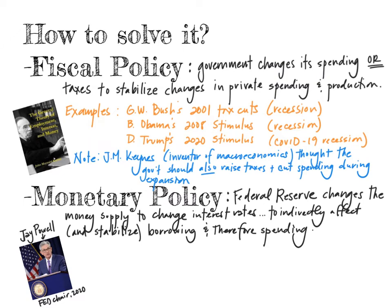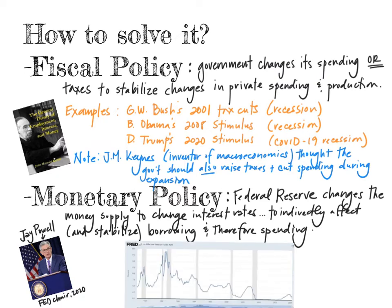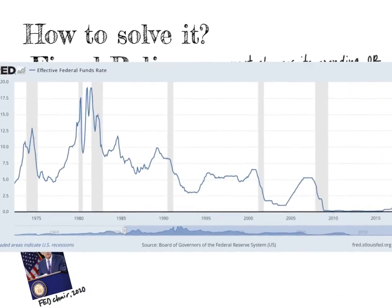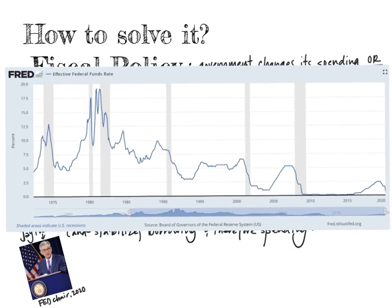The Federal Reserve — an unelected body of economists, bankers, and others — also conducts federal stabilization policy. They change the money supply to change the interest rate, which indirectly affects and stabilizes borrowing and therefore spending. Cutting the interest rate makes it easier to borrow and spend; in a recession, expect interest rates to drop. You can see during recessions that interest rates drop. The federal funds rate is the key interest rate that the Federal Reserve sets and targets, and it affects all other short-term interest rates.